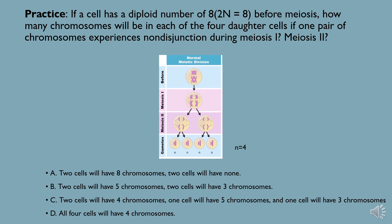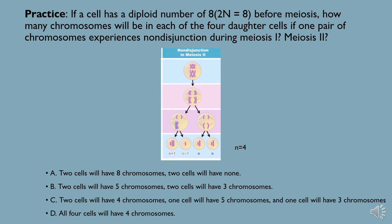If this nondisjunction had instead occurred during meiosis II, characterized by the failure of sister chromatids to separate, we would expect only the gametes directly derived from the cell in which the nondisjunction occurred to be affected. This would leave us with answer C as the correct choice, as two cells would be unaffected and have four chromosomes, one cell would have an extra copy and thus have five chromosomes, and one cell would be missing a copy and would thus have three chromosomes.